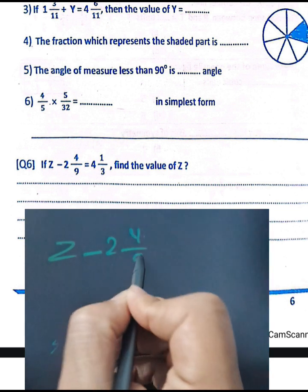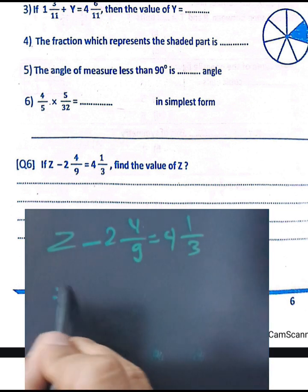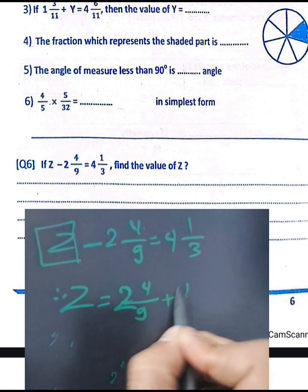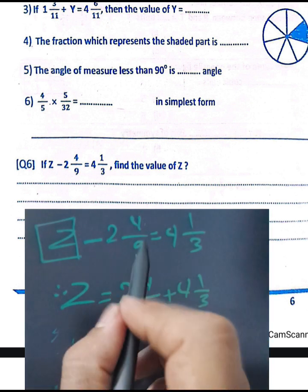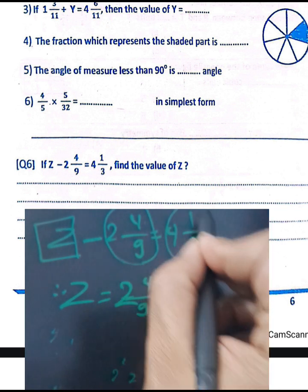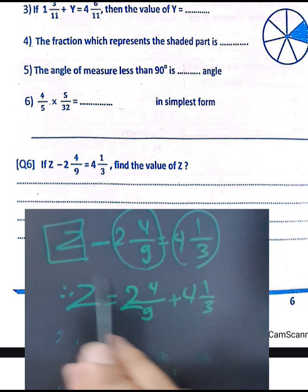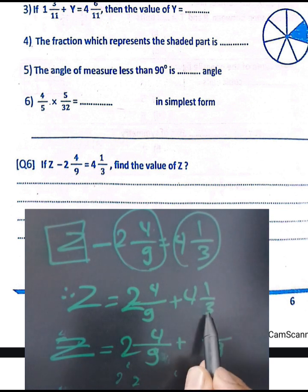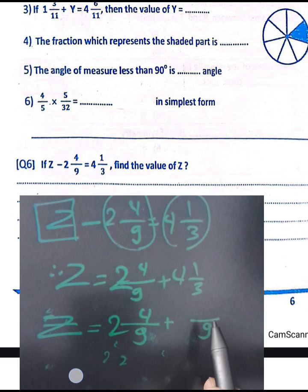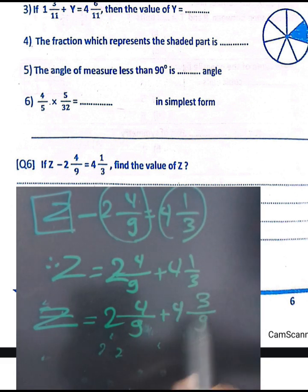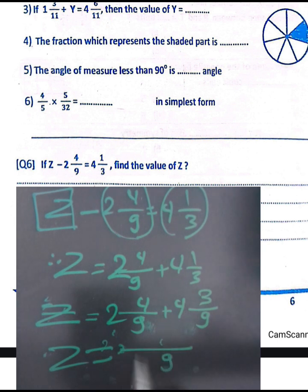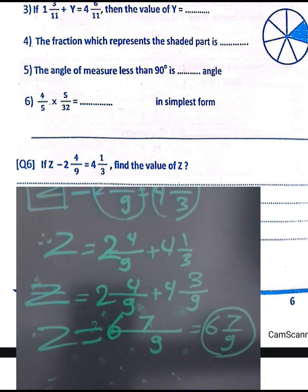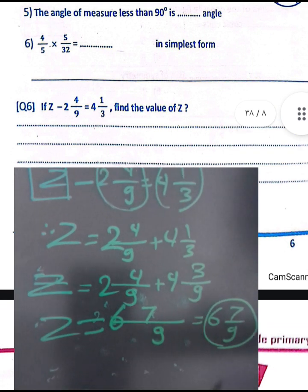Question number six: if z minus two and four over nine equals four and one third, find z. The value of z equals two and four over nine plus four and one third. Find the least common denominator, which is nine. Convert one third to three over nine. Then two plus four equals six, and four plus three equals seven. So z equals six and seven over nine.